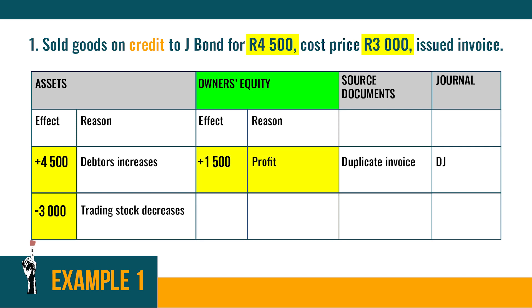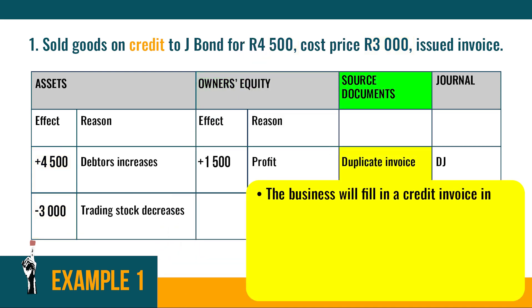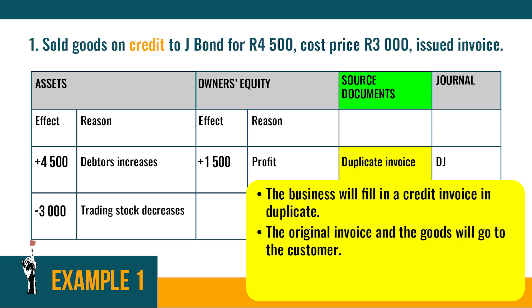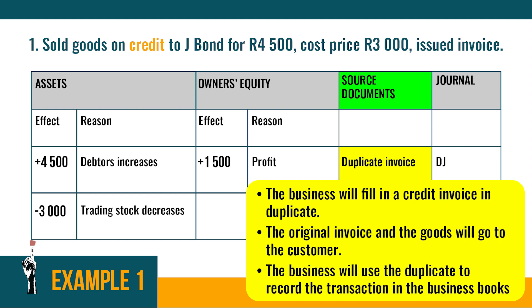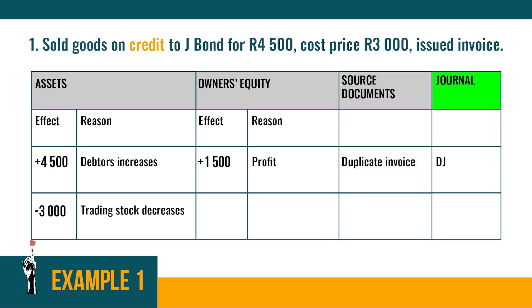Let's look at the source document. The business will fill in a credit invoice in duplicate. The original invoice and the goods go to the customer, and the business uses the duplicate to record the transaction in the business books. The Debtors Journal (DJ) is used as a first entry for credit sales of the business — we use the Debtors Journal only when the business sells its goods on credit.